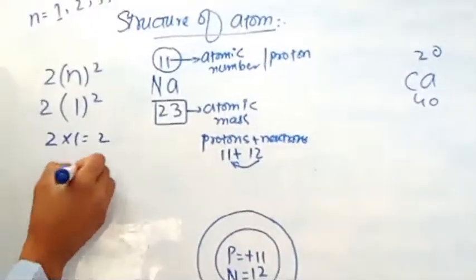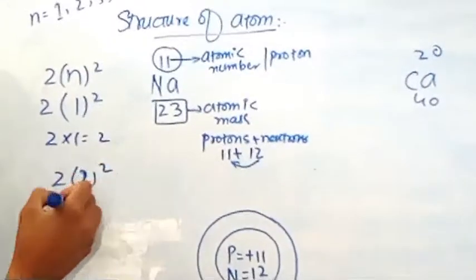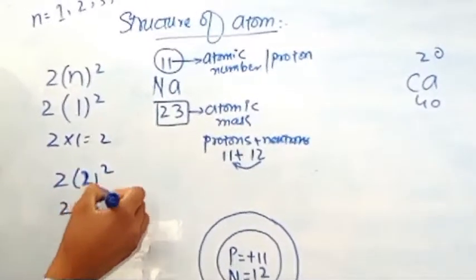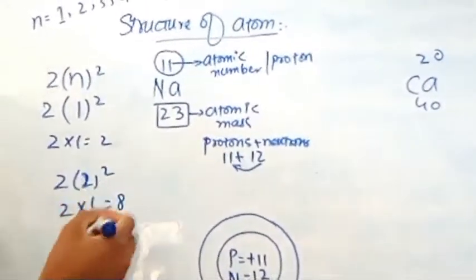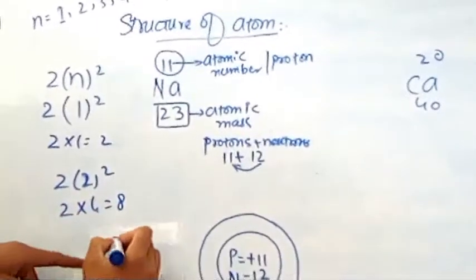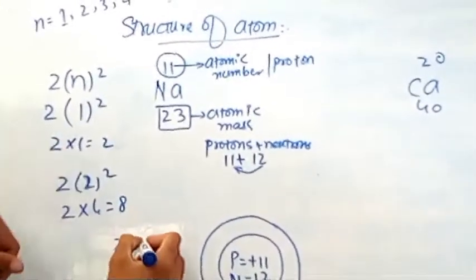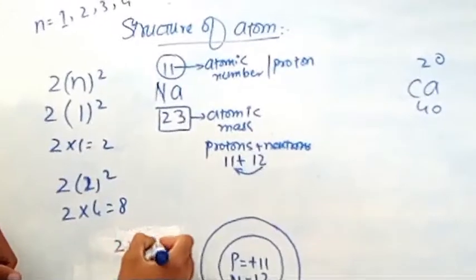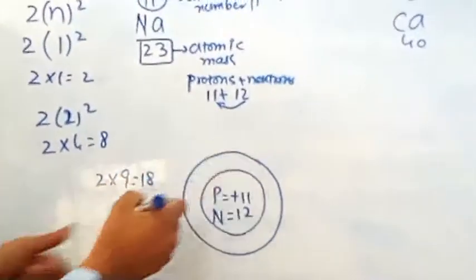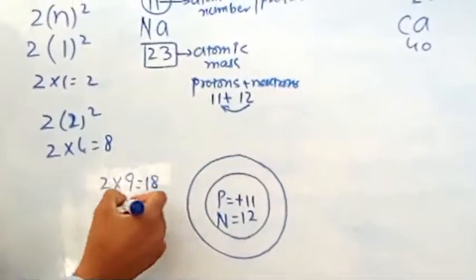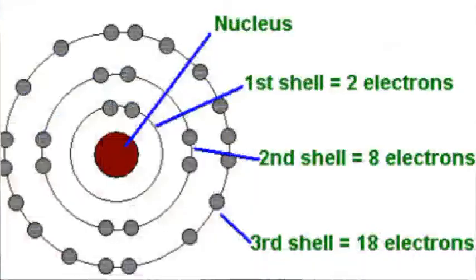The second shell contains 2 × 2² = 2 × 4 = 8 electrons. So the second shell contains 8 electrons. The third shell contains 18 electrons, the fourth shell contains 32 electrons, and the fifth shell contains 50 electrons.